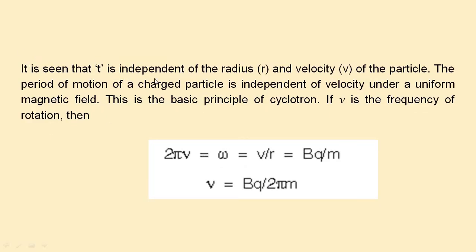It is seen that T is independent of the radius and velocity of the particle. That means at each semicircle, the particle takes the same time to complete it. So after a fixed time interval, you change the polarity and it will work correctly. The period of motion of a charged particle is independent of velocity under a uniform magnetic field — this is the basic principle of the cyclotron.